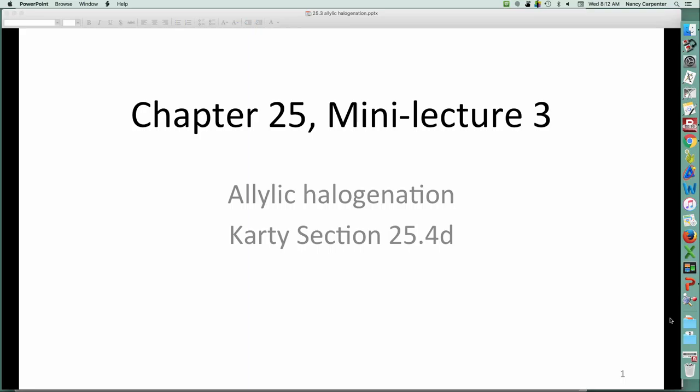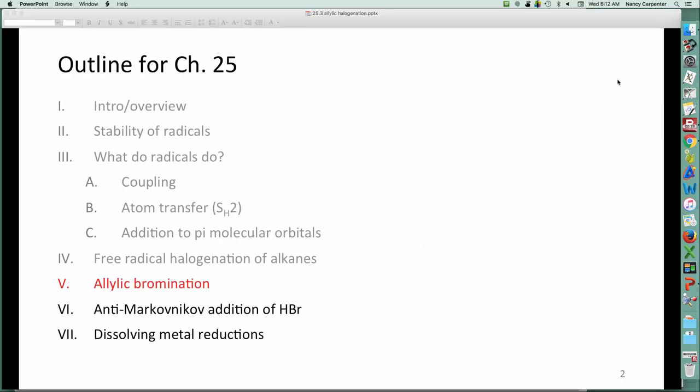So just to give you some context as to where we are, we've covered the stability of radicals. We know how to predict where a radical will be formed. The most stable radical, like the most stable carbocation, is always going to be formed, and we've looked at a big overview of what they do. The first reaction we learned was this free radical halogenation of alkanes, which frankly is kind of an odd reaction. We don't usually use alkanes as starting materials, but that's the one reaction we have now that will make alkanes into something useful besides gasoline to power our snowmobile.